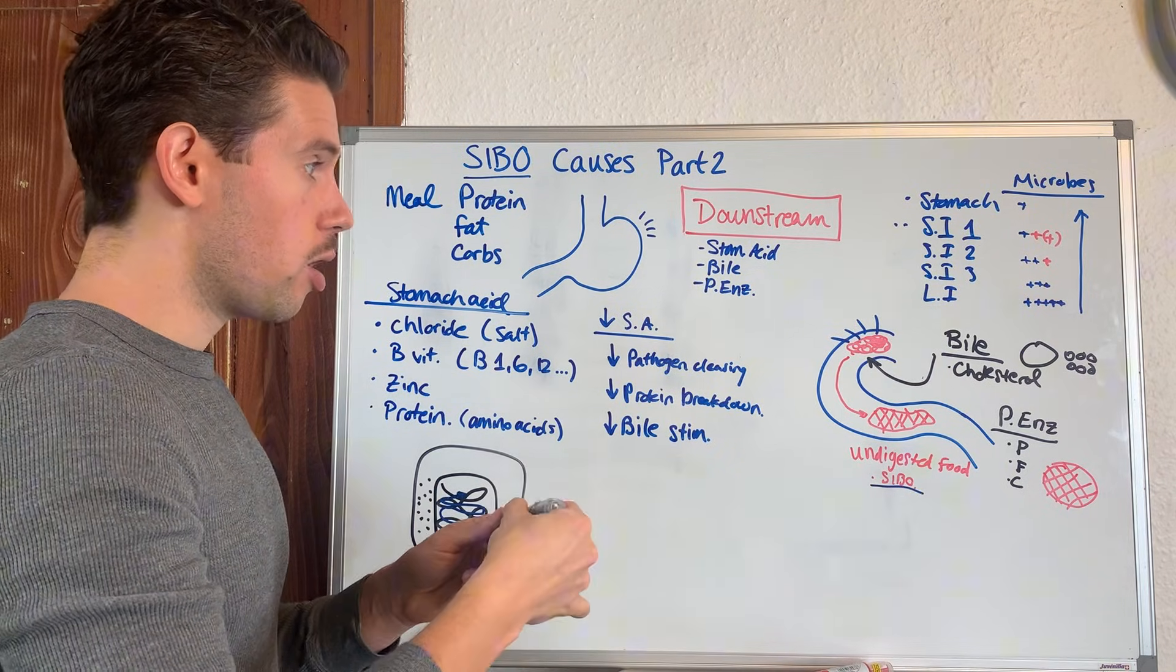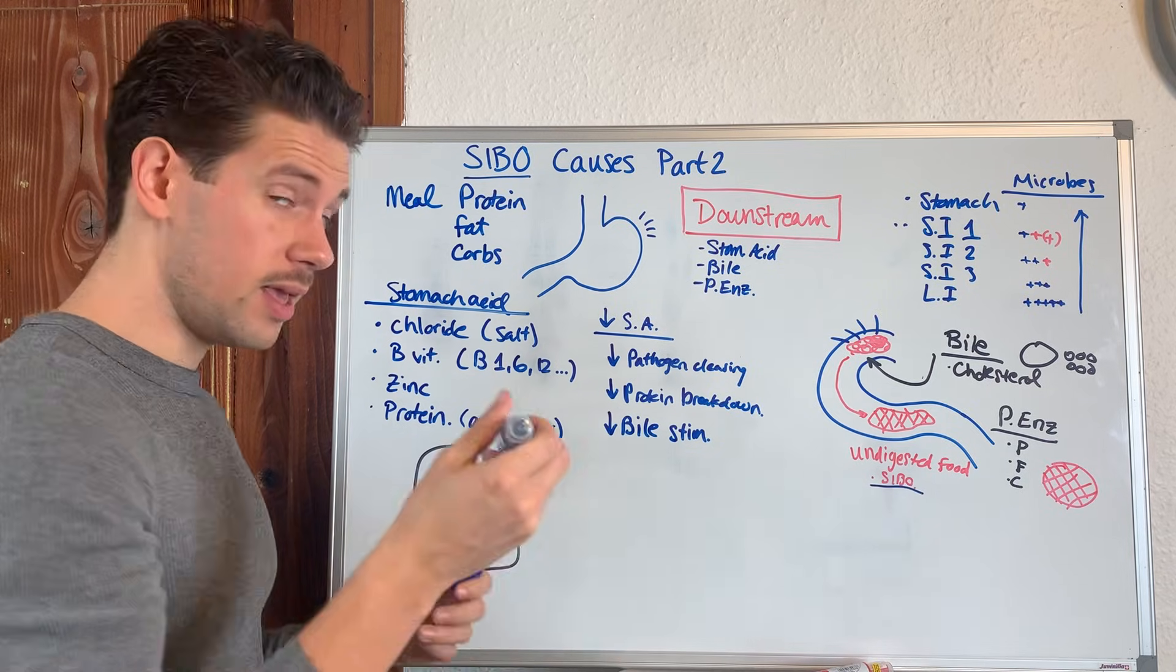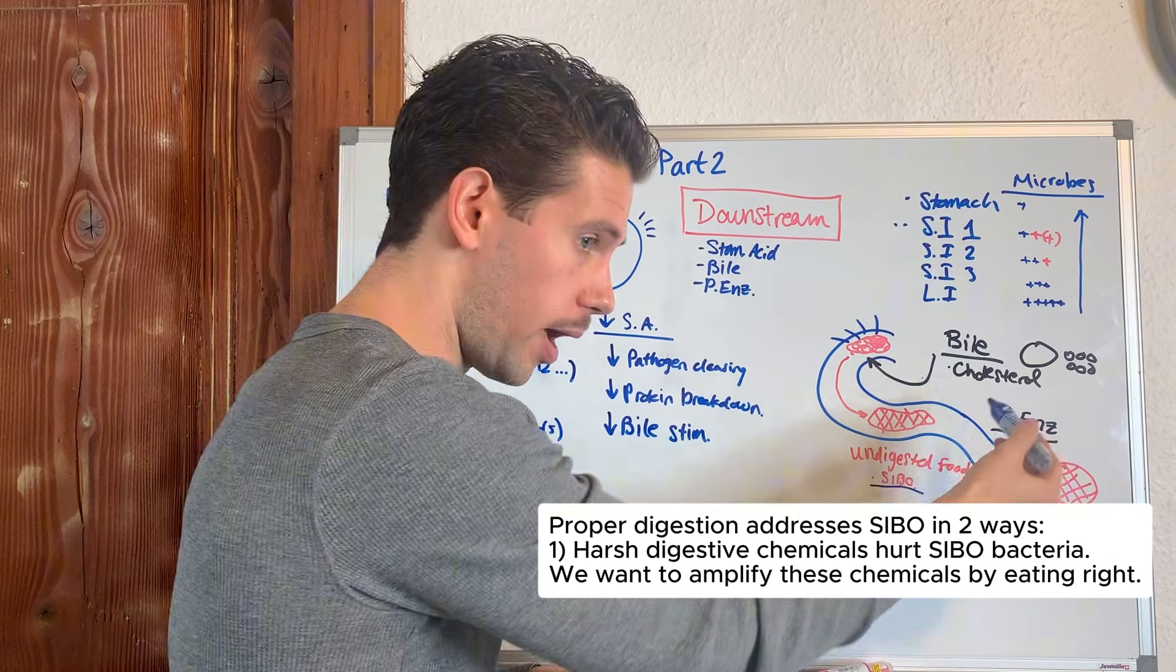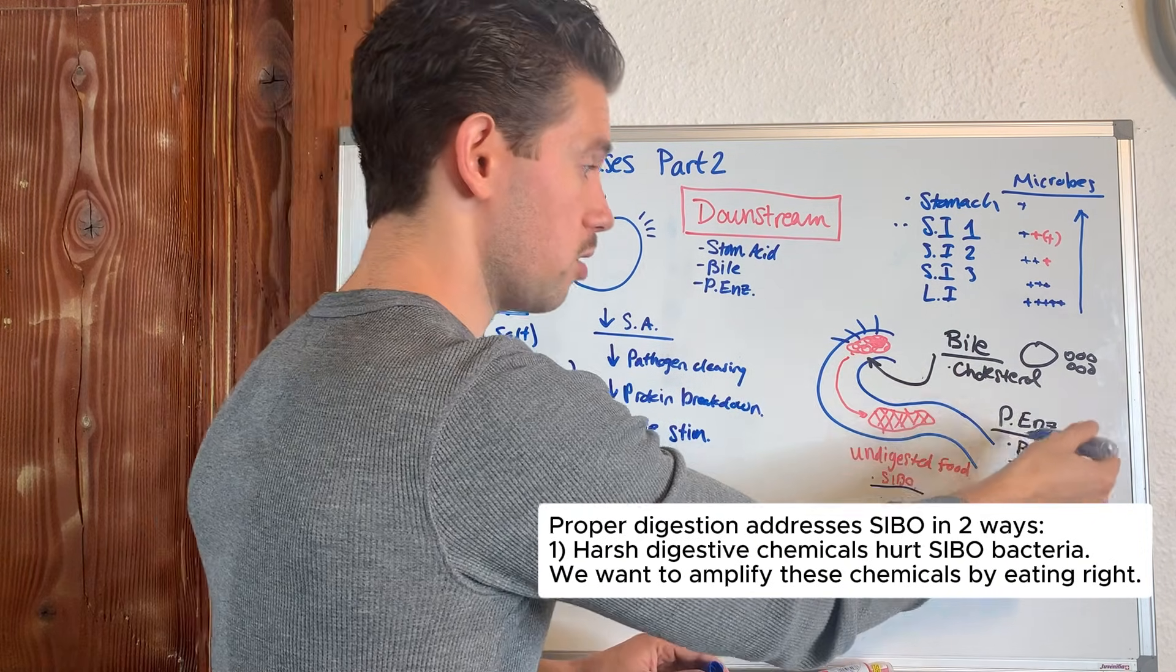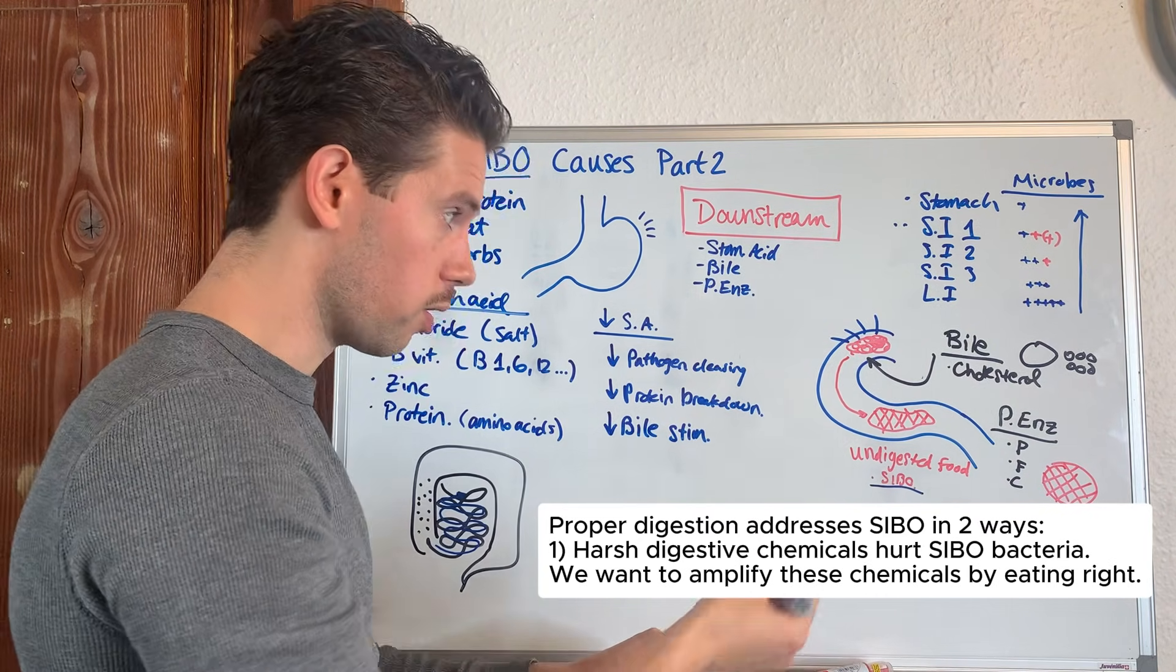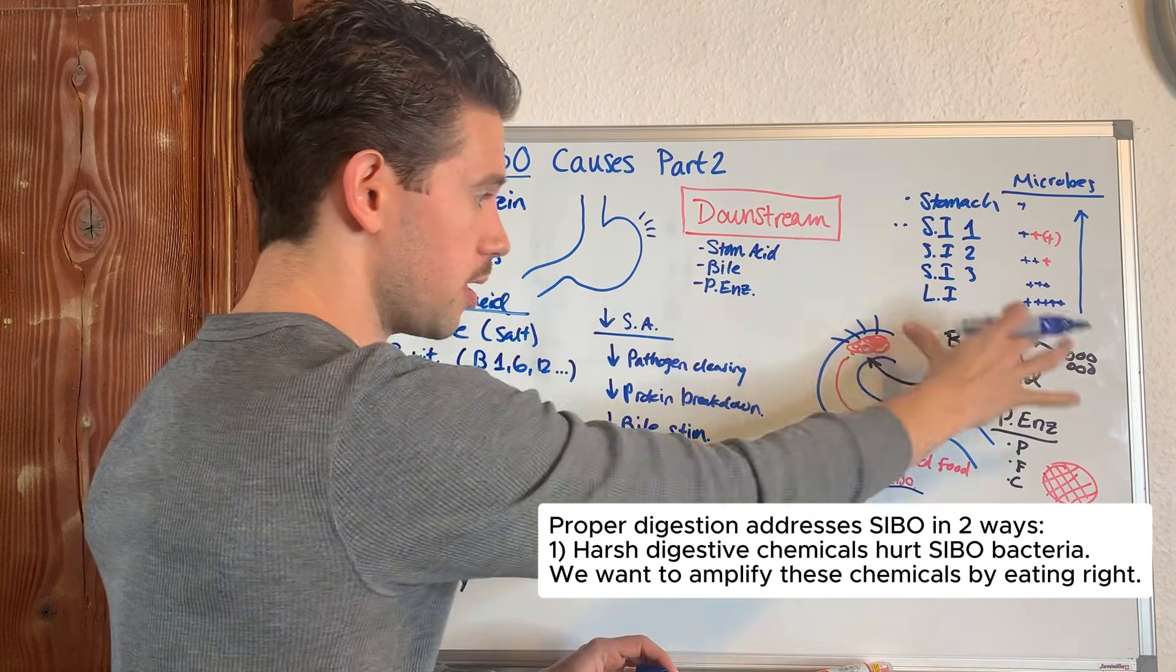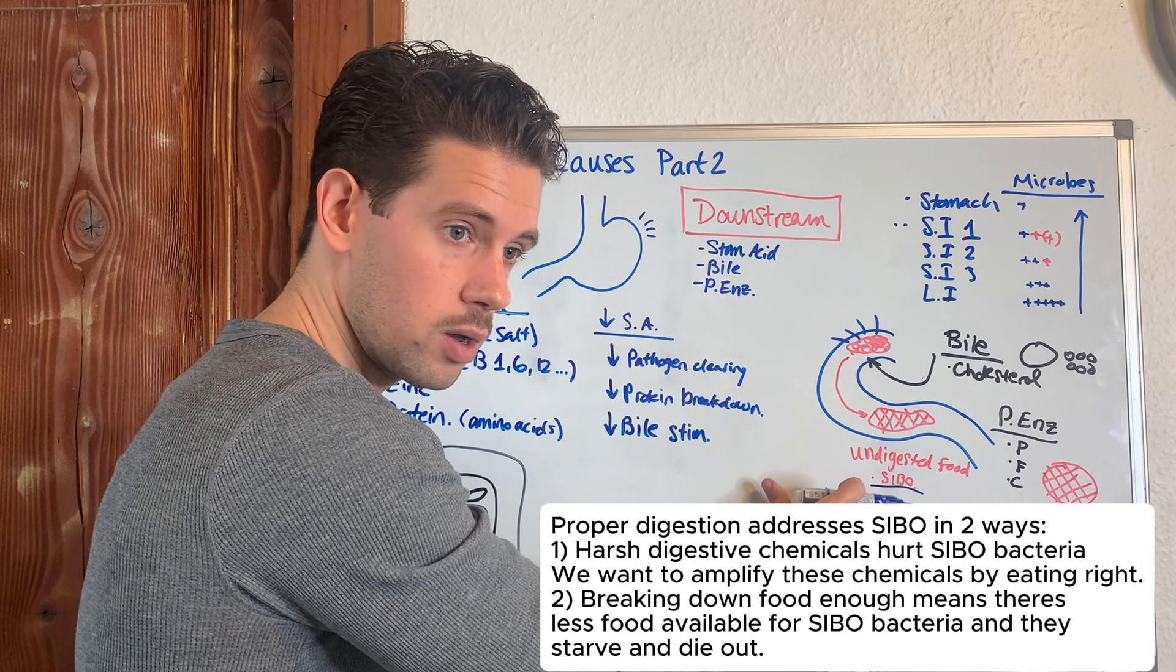How you can effectively address your SIBO infection: by re-amplifying your body's ability to produce stomach acid. Stomach acid is harsh. When you have enough stomach acid, you create an abundance of bile being released into the digestive tract, and bile is harsh towards microbes. As that keeps going farther down into the pancreatic enzyme area, those enzymes are also harsh for these microbes. But also, if your foods are being broken down enough, there isn't food left over for the SIBO to take over and make it starved out.